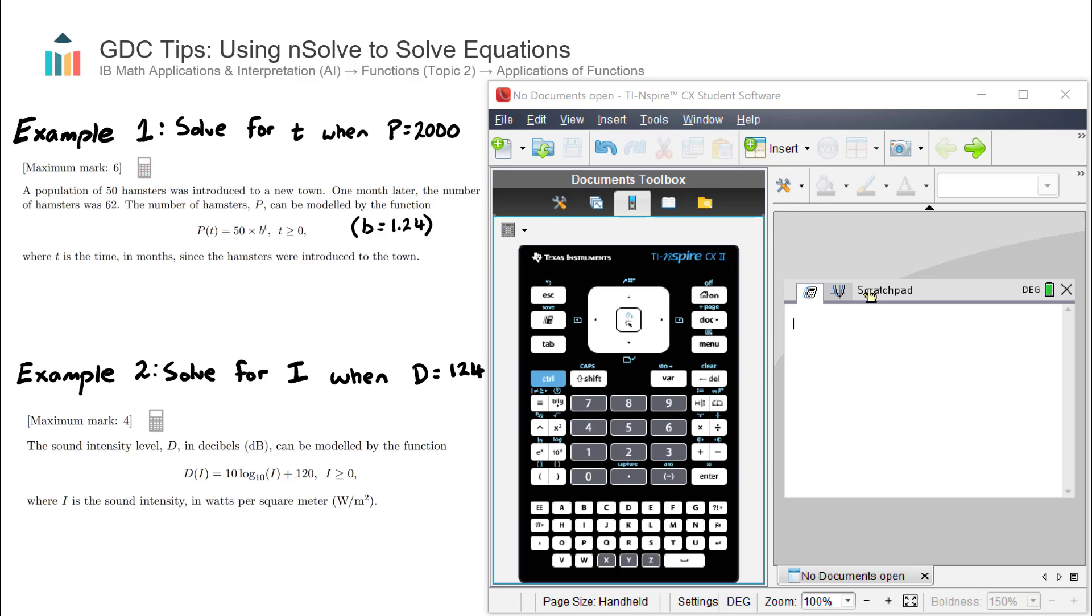We have an exponential function that represents the population of hamsters. In prior parts of the question, let's assume that we found B equals 1.24. Our question is to solve for time when the population equals 2,000. In other words, how long did it take for the population P to reach 2,000?